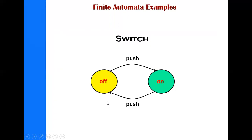Let us take a very simple example. Say I have a switchboard with one switch. When I push the switch button, the light turns on. Similarly, when I push it again, the light turns off. This is one of the simplest examples we can give for finite automata.